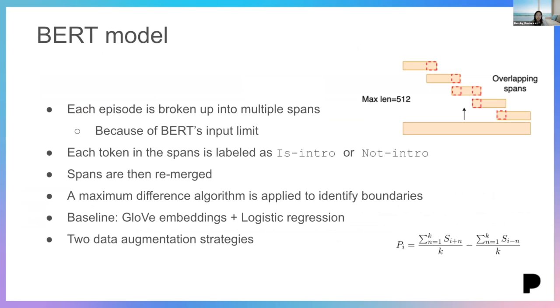And our method is based on the BERT model. For each episode, we break down the transcript into multiple spans. And this is because of BERT's input length limit. And then we train the model to label each token as part of the intro or not part of the intro. Then we re-merge the spans into the original episodes. And because the model creates token level predictions, we need it to use a maximum difference algorithm to identify the boundaries of the intro. And we use a baseline from GLOVE embeddings and logistic regression. And we further use two data augmentation strategies to increase the amount of training data, as our dataset is not very large.